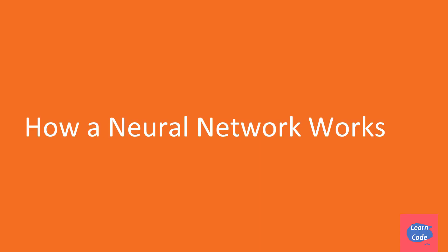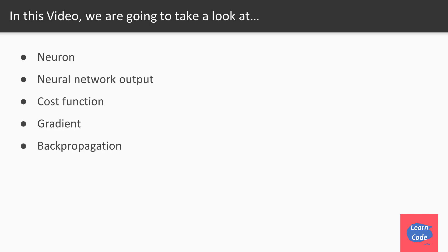Hi and welcome back. In this video on how a neural network works, we are going to look at the basic building block of a neural network called a neuron. We'll see how the neural network outputs its output, the cost function involved in a neural network architecture, the gradient, and the technique called backpropagation, which allows the neural network to learn.